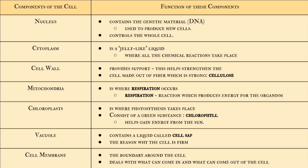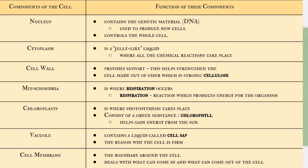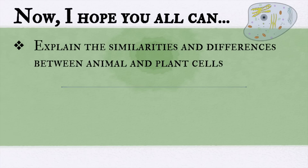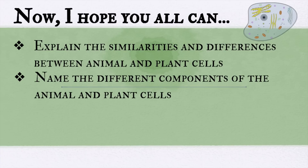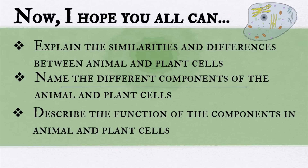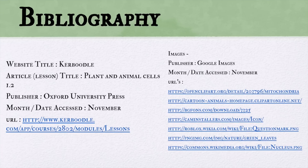Remember that the cell wall, chloroplasts, and vacuole are the only components found exclusively in plant cells — they are not in animal cells. I hope you can now explain the similarities and differences between animal and plant cells, name the different components, and describe their functions. The sources used include the digital textbook Caboodle, and images are from Google Images. Thank you.